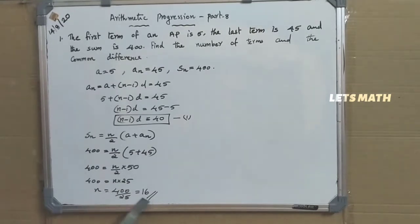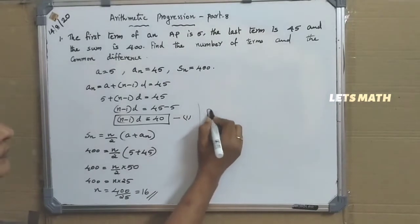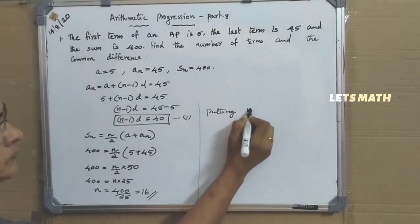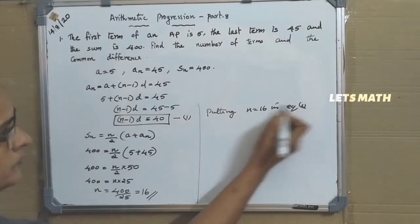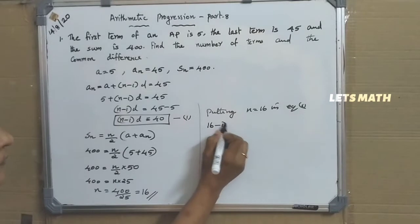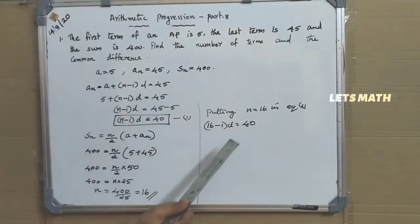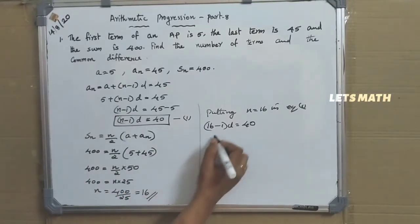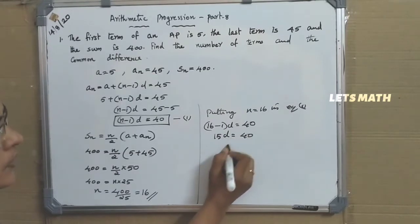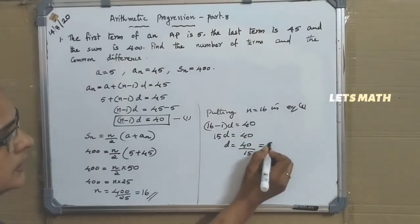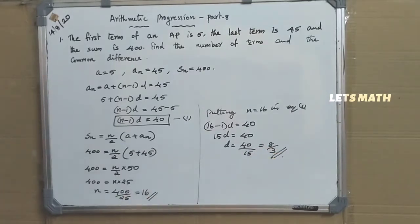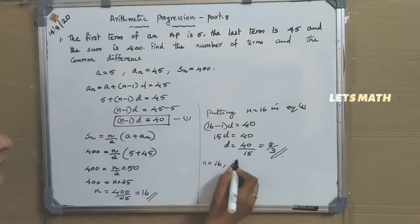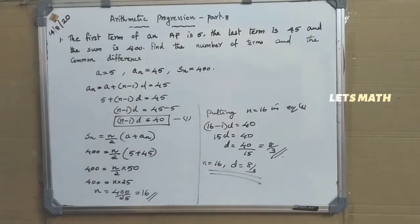Now we put N equal to 16 in equation number 1. We have N minus 1 into D equal to 40, that is 16 minus 1 into D equal to 40, or 15D equal to 40. So D is 40 by 15, that is equal to 8 by 3. We got the number of terms as 16 and the common difference as 8 by 3.